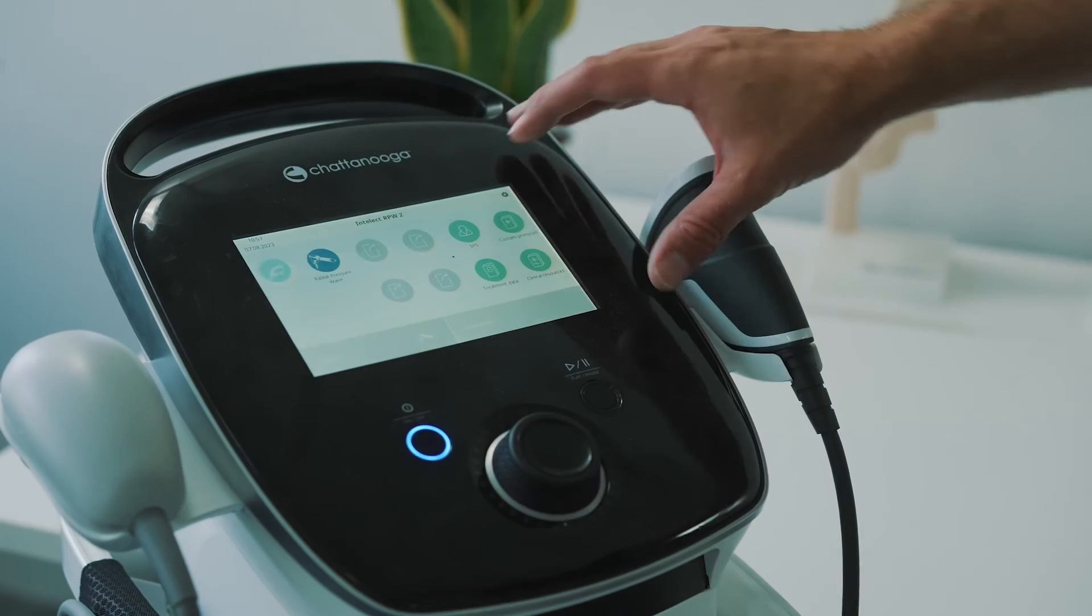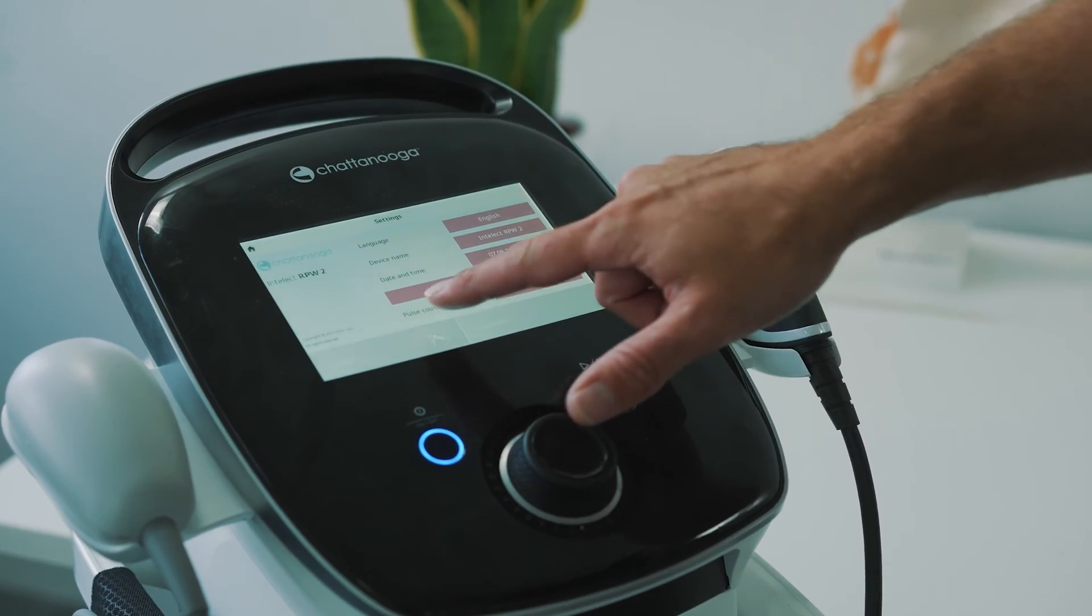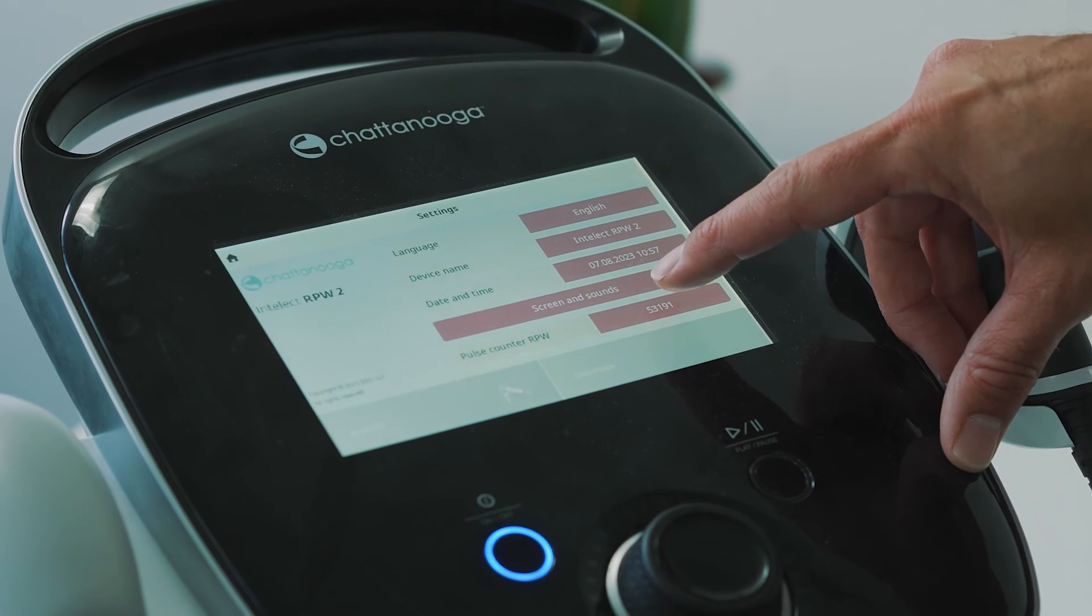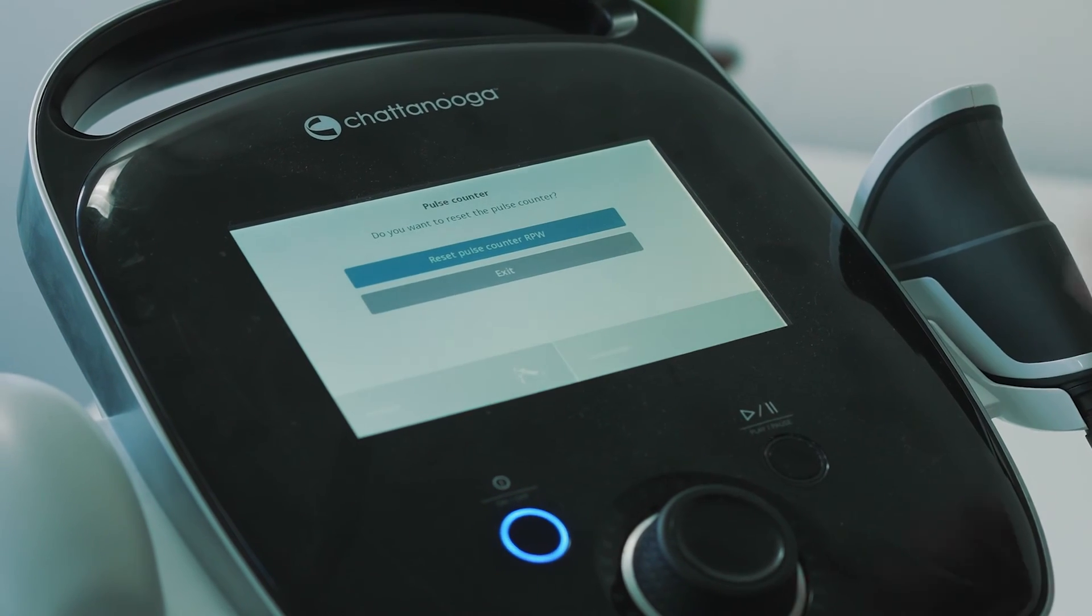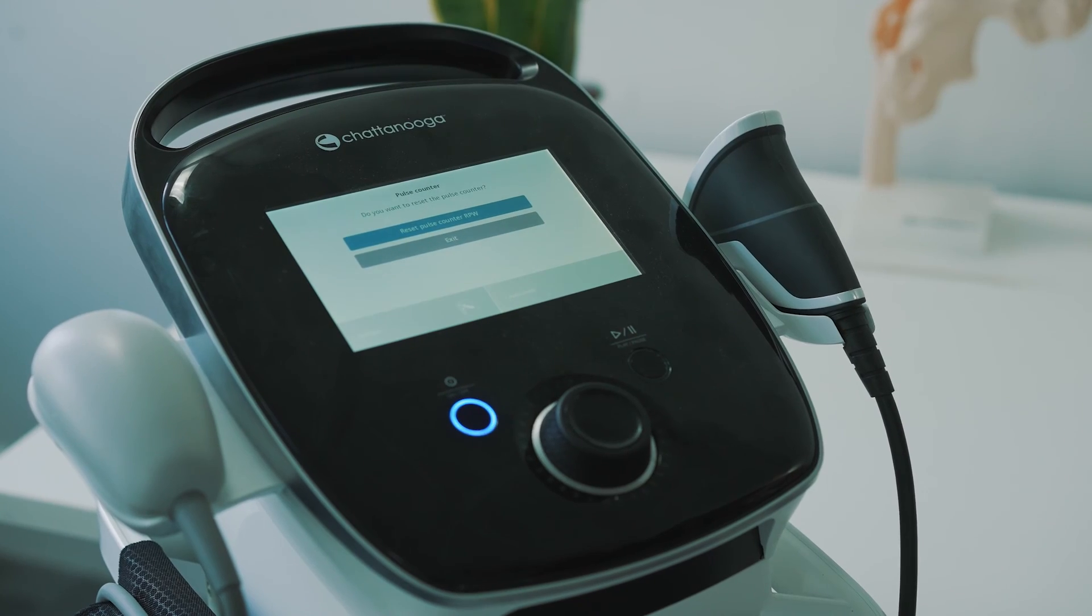To reset the counter, select the cog in the top right hand corner. Select the option where it says pulse counter RPW and click reset pulse counter. This will reset the counter to zero.